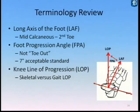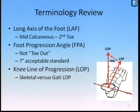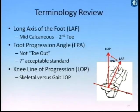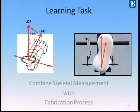We're looking at knee line of progression from a skeletal standpoint versus a gait standpoint. You have to evaluate the literature in terms of their actual protocols for measuring the knee line of progression and foot progression angle — whether it's from a gait standpoint or a skeletal standpoint. For our needs, we need a skeletal foot progression angle, primarily because we're building a device that must match that skeletal alignment. The learning task is: determine the long axis of the foot, measure the skeletal foot progression angle relative to the knee line of progression, and translate that to the orthotic workstation.